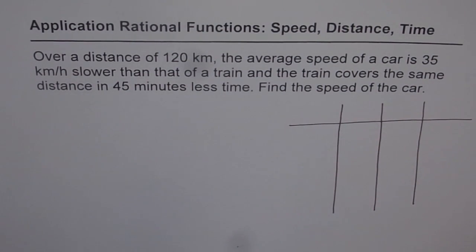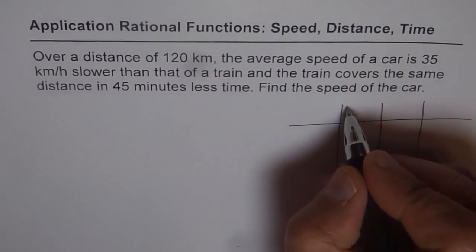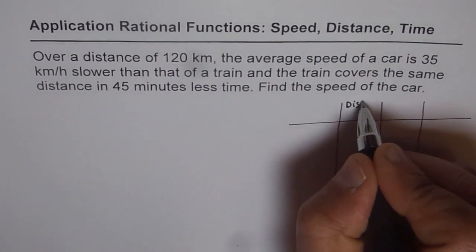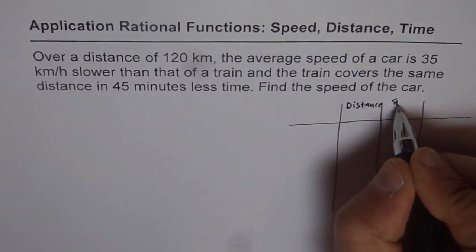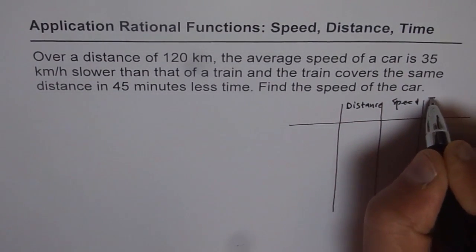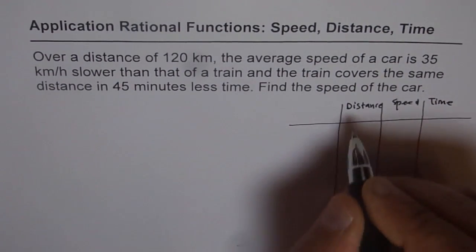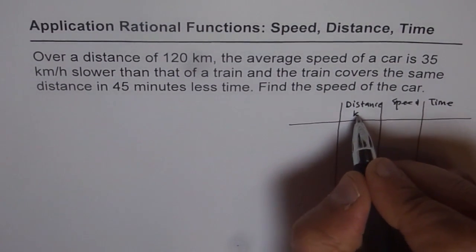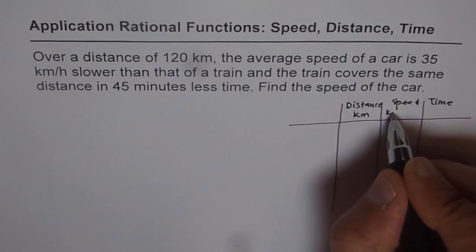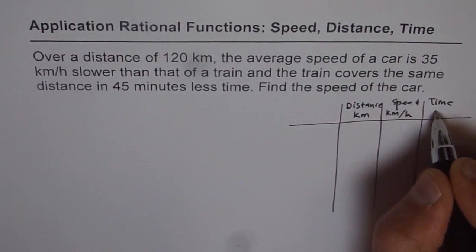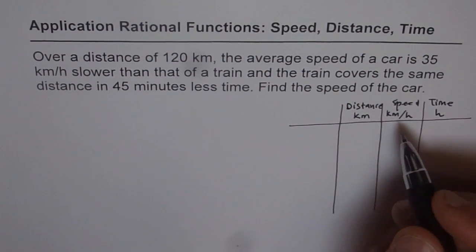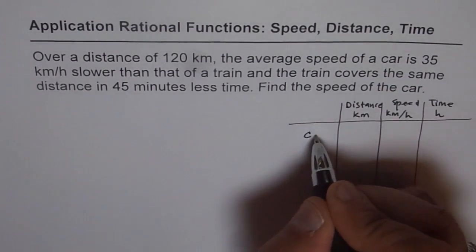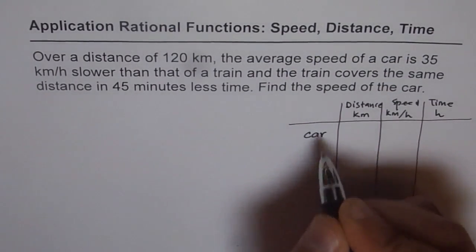So we write distance, speed, and time as our three columns. The units for distance will be kilometers, for speed it will be kilometers per hour, and for time it will be hours. We are given two things here: one is we are talking about car, and then we are talking about train.